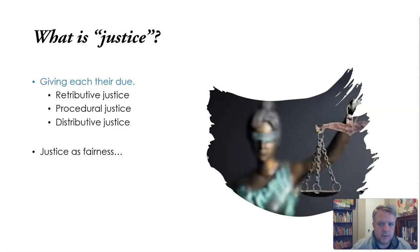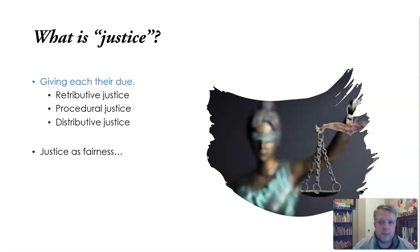In the realm of retributive justice — the realm in which we punish wrongdoers or right wrongs that have been done — we give the wrongdoer what is due to them. A just punishment is one that is proportionate to the crime committed. In terms of procedural justice, we give each their due in the sense that each person is treated as equal before the law. No one is favored by the courts; procedural justice requires that everyone is treated the same — treated fairly.